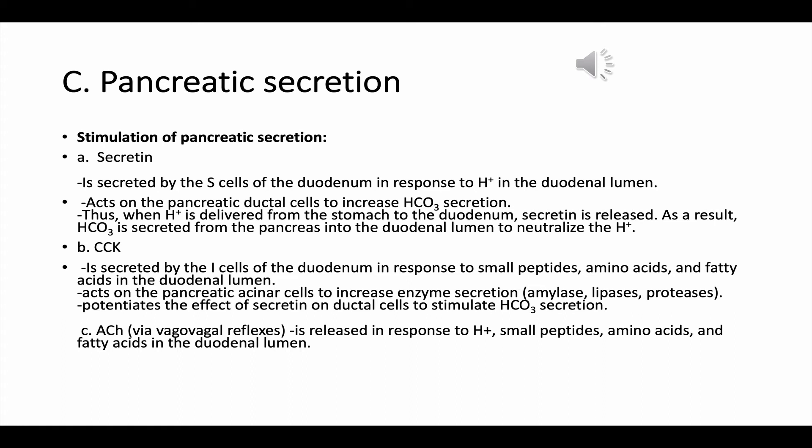Thus, when hydrogen is delivered from the stomach to the duodenum, secretin is released, resulting in bicarbonate being secreted from the pancreas into the duodenal lumen to neutralize the hydrogen. The second messenger for this process is cyclic AMP.